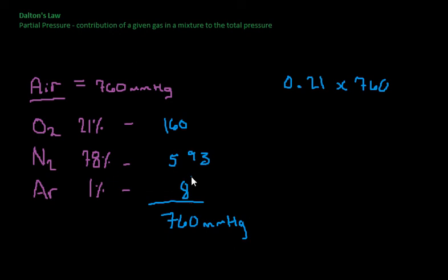And then let's add those up. 160, 593, and 8 should equal, well we come out to 761, but that's because of our rounding. So that's all we're doing, and what I should have done here, I should have been putting units on these. This is 160 millimeters of mercury, this is 593 millimeters of mercury, and this is 8 millimeters of mercury.